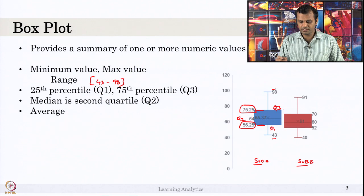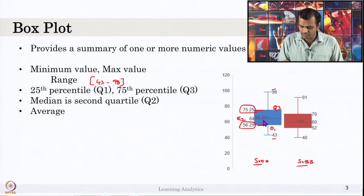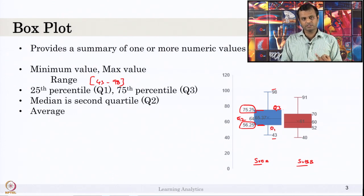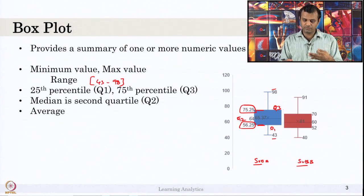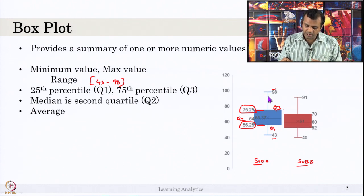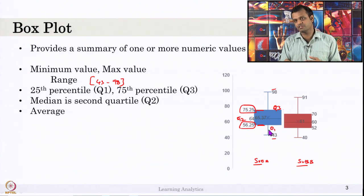The average is indicated by the cross mark. This cross mark is the average — that is 55.37 in subject A and the subject B average is 61 marks. So this box plot provides you the minimum value, maximum value, and how the marks are distributed across all the students — the average, median value — and there are a lot of students in the fourth quartile, from 75 to 98, but the deviation is more here. But 15 students in the range 43 to 56 show less deviation there.